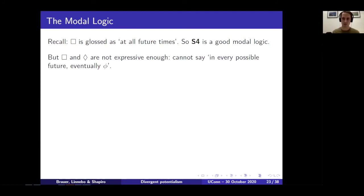We're going to work up to getting a nice mirroring theorem again, drawing on what's sometimes called the Beth-Kripke semantics for intuitionistic logic. Before we can get there, we need to increase our expressive capacities a little bit. Recall that the box is glossed as at all future times, so S4 is going to be a good modal logic and we'll keep the frame properties of S4 — an accessibility relation that's transitive, reflexive, and without loss of generality anti-symmetric. But the box and diamond aren't going to be expressive enough, because they don't allow us to say: in every possible future, eventually phi is the case.